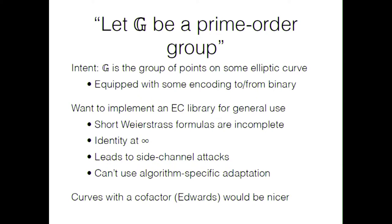Oftentimes when you have a particular algorithm in mind — say, Diffie-Hellman — you can arrange your arithmetic to just avoid adding a point to itself and avoid the identity point. But in the general case, and certainly if you're trying to build a library, you can't do that because you don't know what the underlying algorithm is going to do.